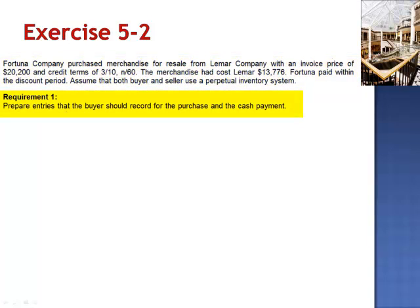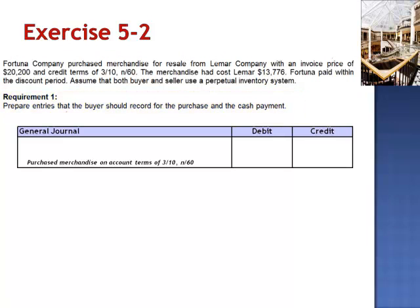Requirement 1: Prepare entries that the buyer should record for the purchase and the cash payment. As we saw in Exercise 1, when we purchase merchandise on account using a perpetual inventory system, the journal entry debits merchandise inventory for the invoice price, $20,200, and credits accounts payable for the same amount.